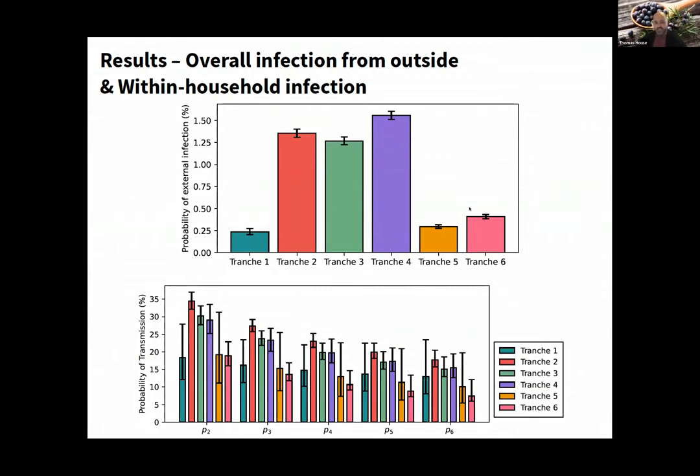These are probabilities of transmission within households. They seem to go up after summer. I personally believe this is very weak evidence that being in summer reduces transmission—if people have windows open more at home or socialize with family outside, that would make sense for lower within-household probabilities.